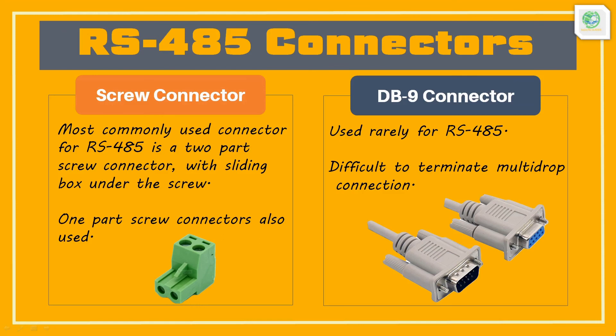The preferred connector is the two-part screw connector with the sliding box under the screw, as shown in the figure. Manufacturers sometimes use the DB9 connector instead. The DB9 connector has problems when used for multi-drop connections, as the RS-485 multi-drop system requires the connection of two wires so that the second wire can continue to the next device. This can be achieved simply with screw connectors — two wires can be twisted together and inserted under the screw — but with a DB9 connector, the two wires must be soldered together with a third wire, which is then soldered onto the pin of the DB9 connector.